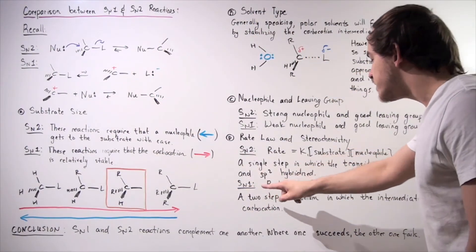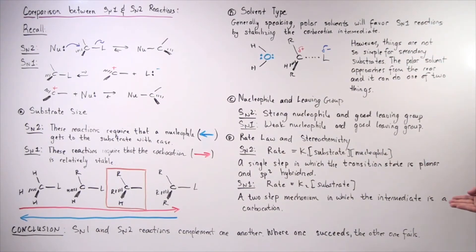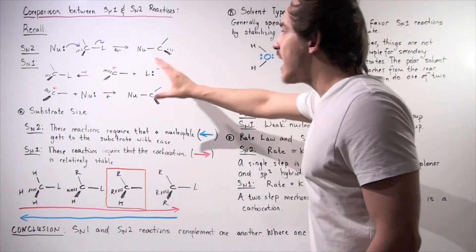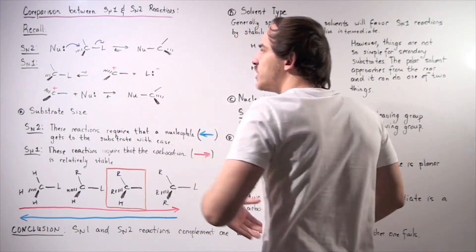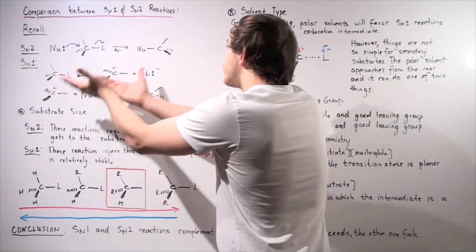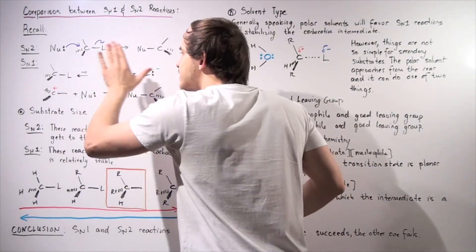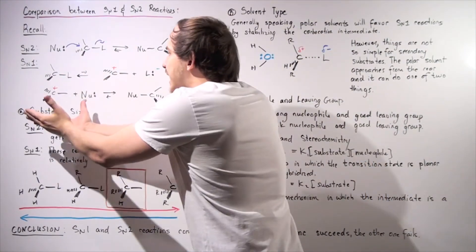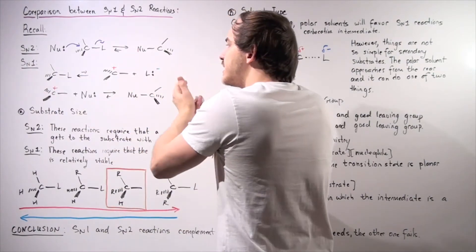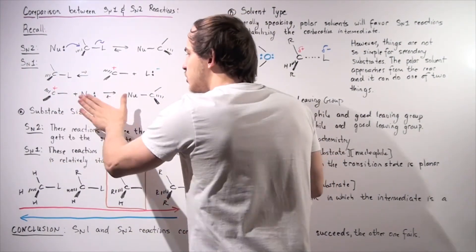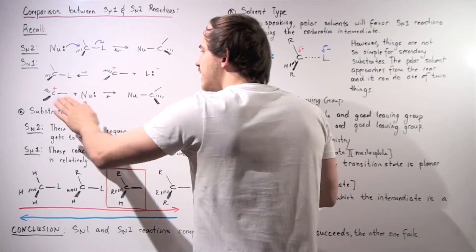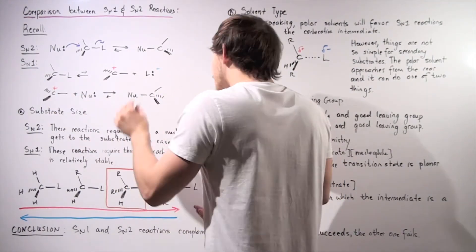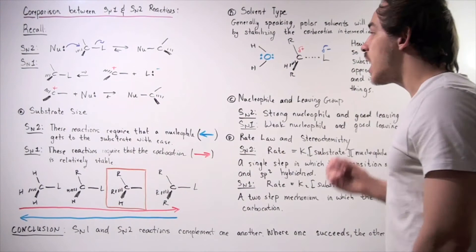In SN2, there are no intermediates — we go from reactant straight to final product. But in SN1, we begin with the substrate, go to a carbocation intermediate, and the intermediate then reacts with the nucleophile to form our product. So the nucleophile in SN1 acts to determine the final structure of the product.